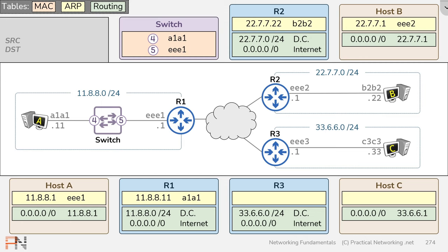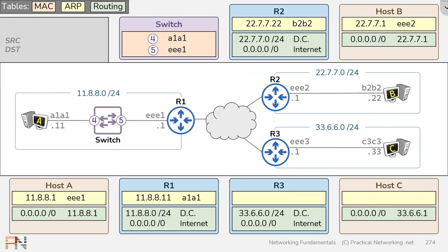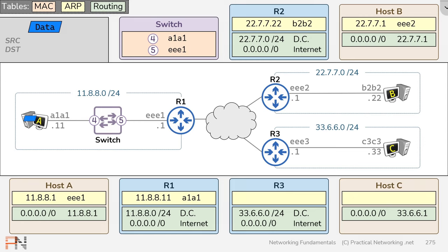We just showed you everything that happens to get data from host A all the way to host B and back again, and how each device used a MAC address table, an ARP table, and a routing table to make that happen. Next, host A is going to send some data to host C. If this is beginning to feel repetitive — that's great, it means you're learning how it all works. Remember, all these devices — hosts, switches, routers — all follow simple, consistent packet processing rules. If you understand those rules, you can scale this topology to hundreds of devices and still walk through each step.